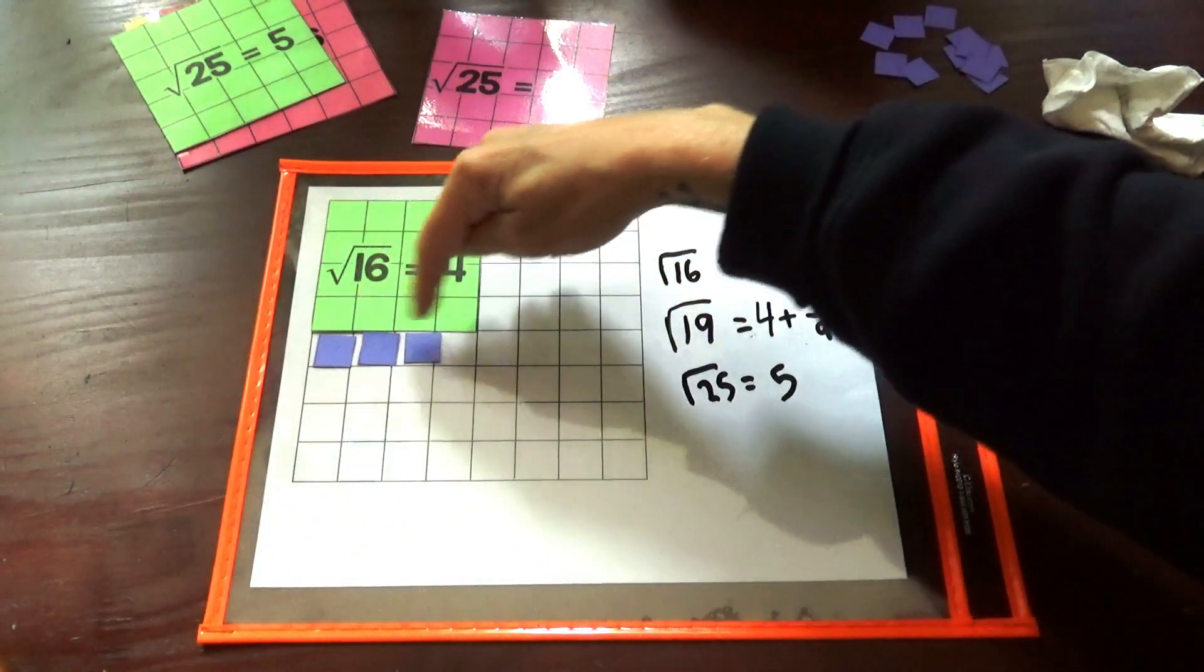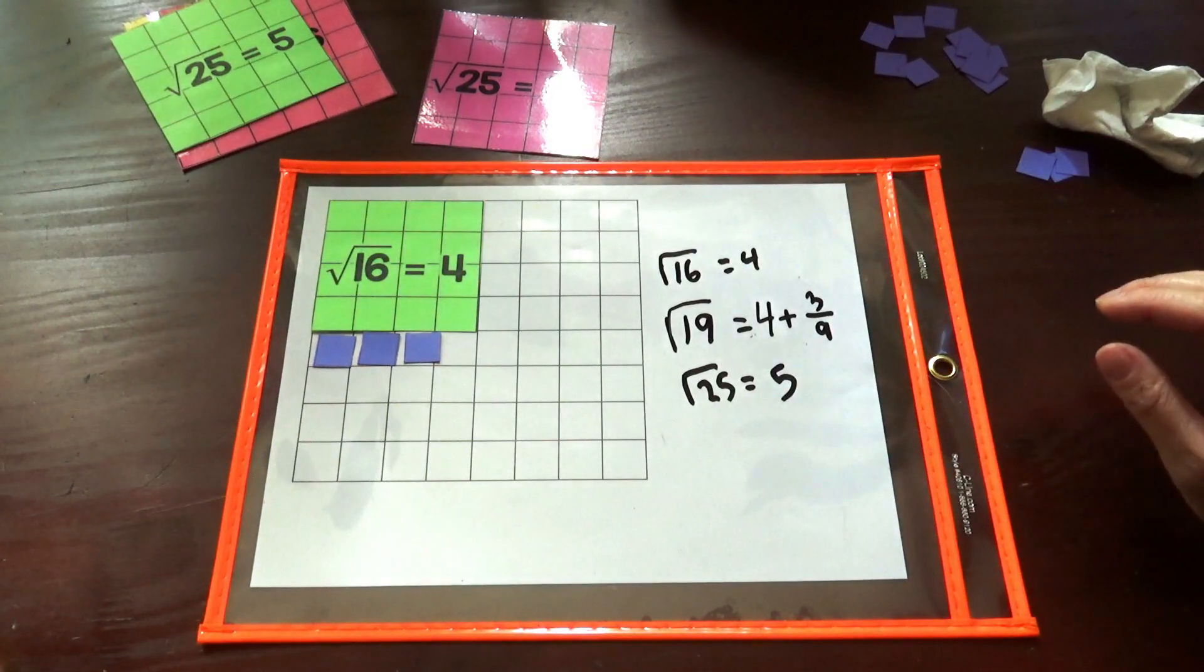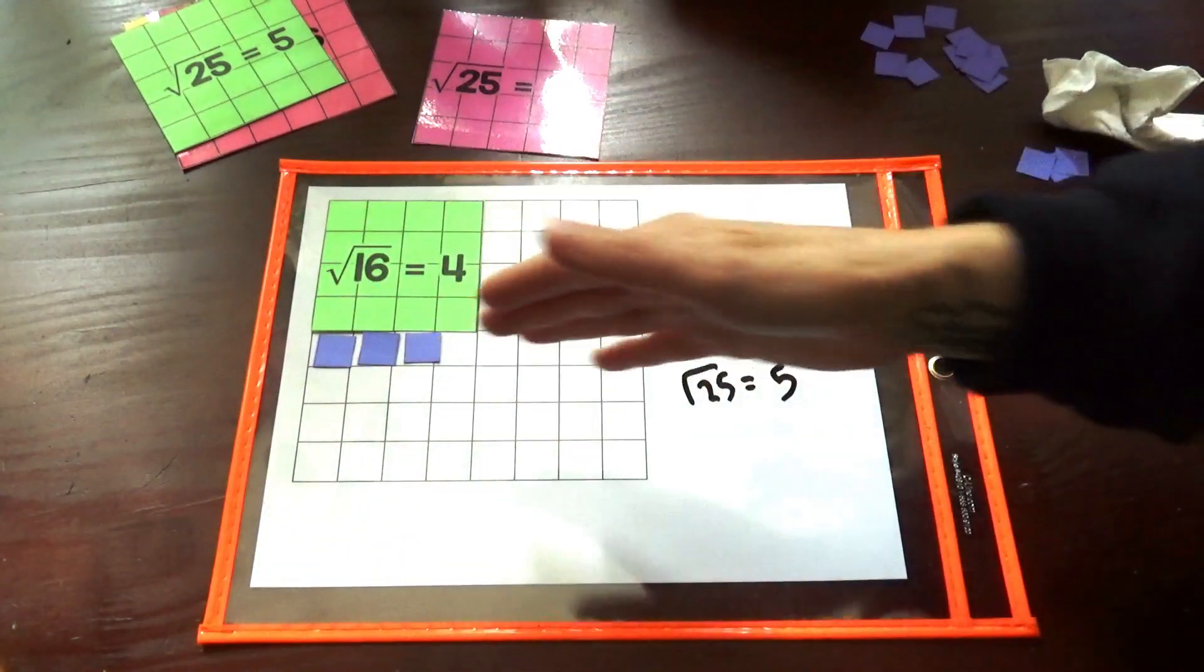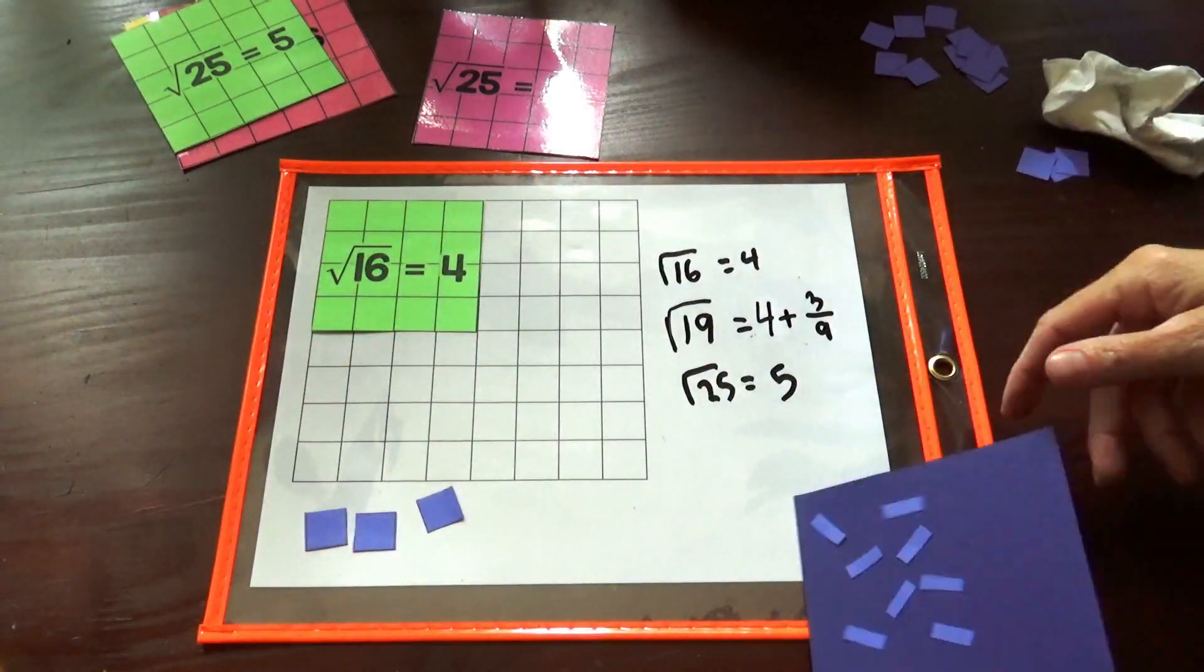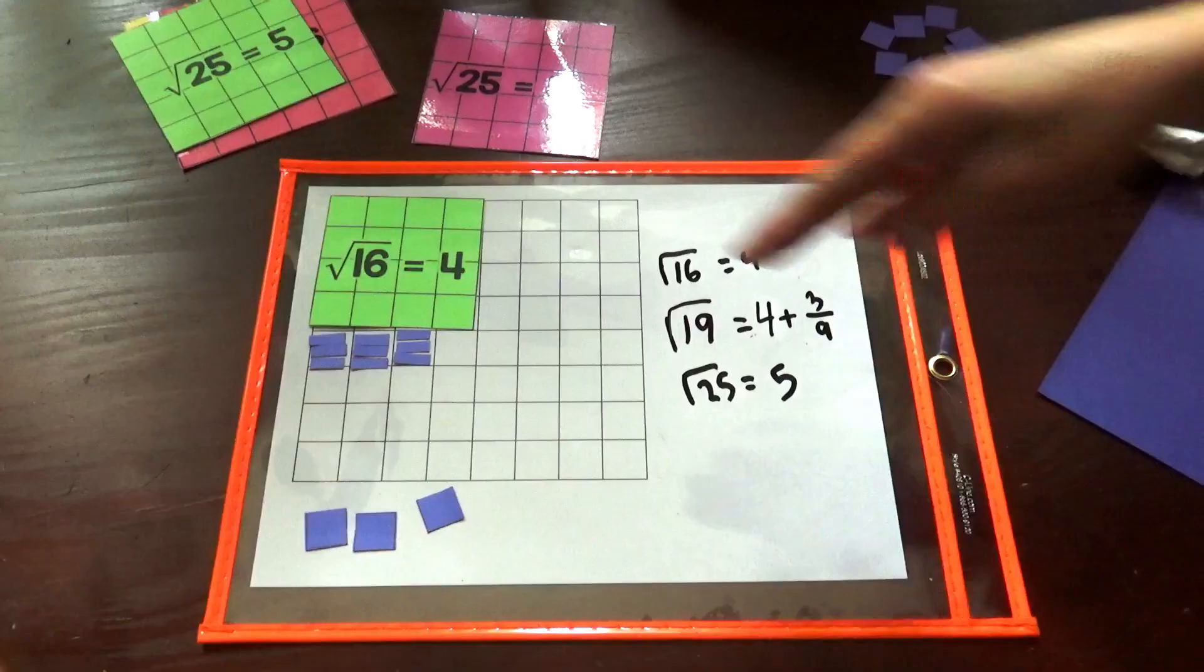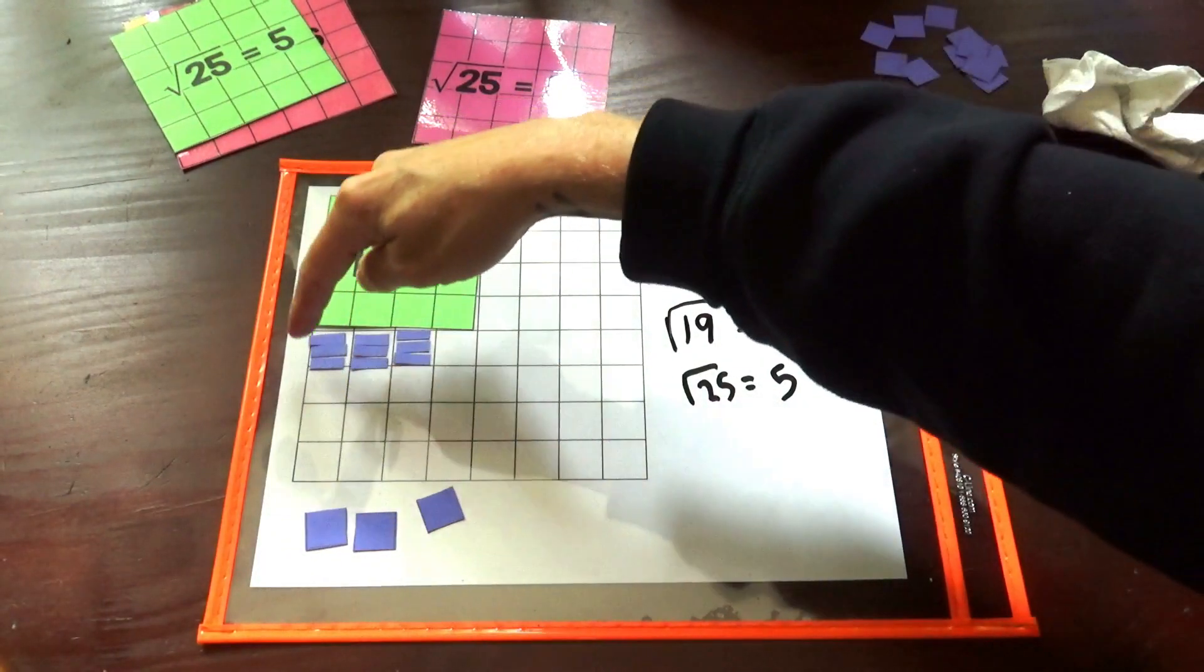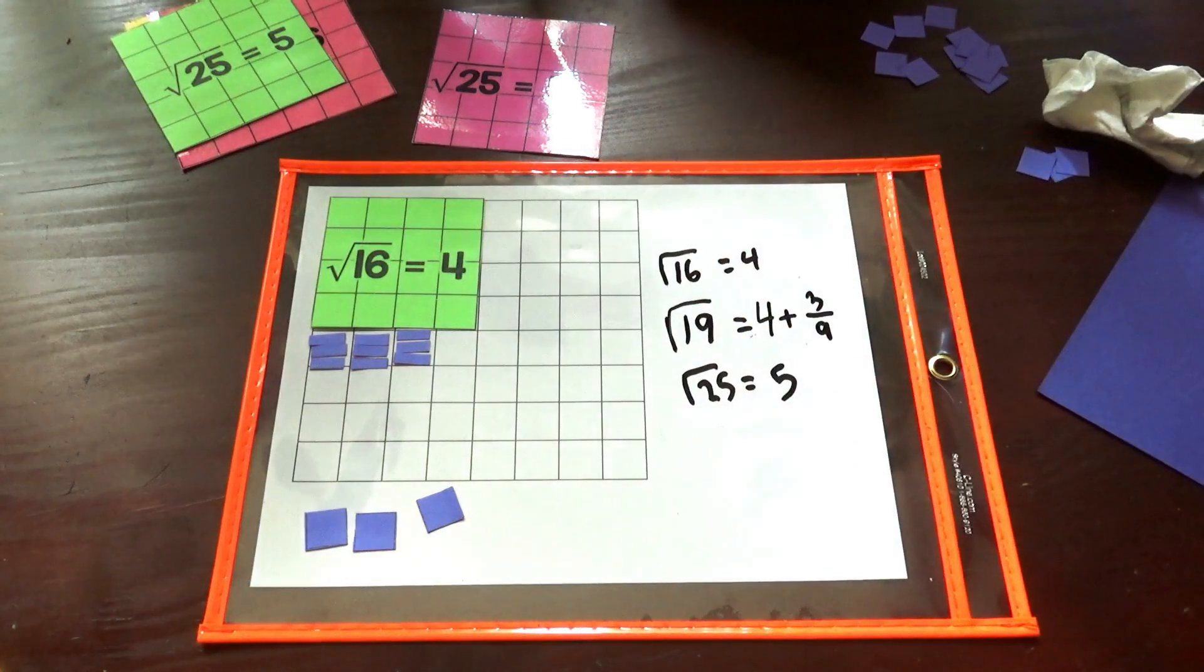But this feels a little bit funny because this is a square and these are just three squares hanging out. It doesn't really seem like we're talking about the same kind of thing here. So I want to replace these three with thirds. We can spread these thirds out around the sides of this square root 16 to show you that we're really building a new type of square, a square that has a fractional side length.